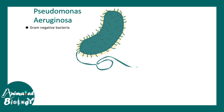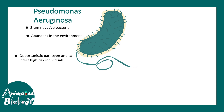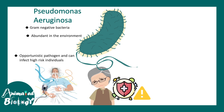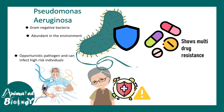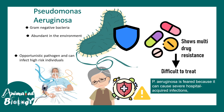Pseudomonas aeruginosa is a gram-negative bacteria which is abundant in the environment. It's an opportunistic pathogen and can infect high-risk individuals — for example, a person who is on a ventilator or who is immunocompromised. Importantly, Pseudomonas aeruginosa is getting increasingly resistant to multiple drugs, making it very difficult to treat clinically. It is also the most commonly acquired hospital or ICU-acquired infection.